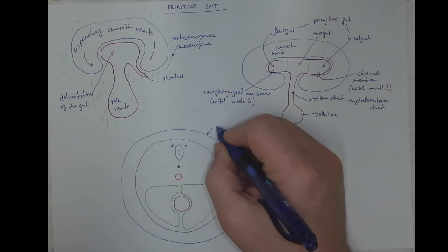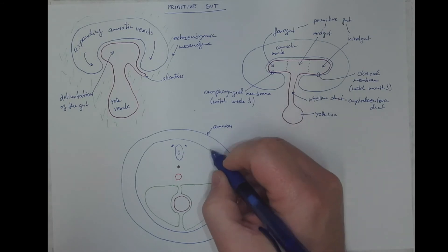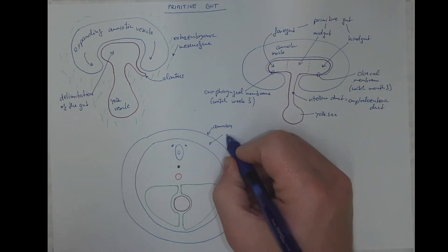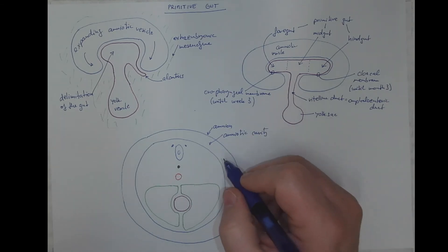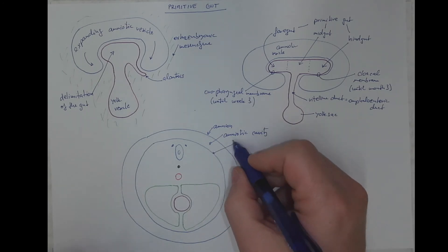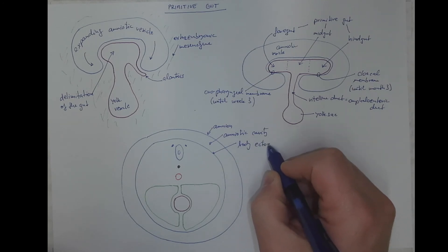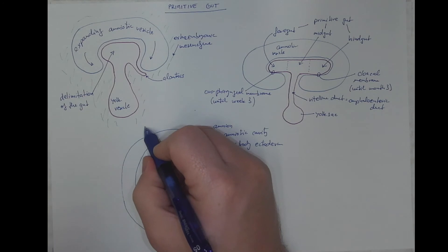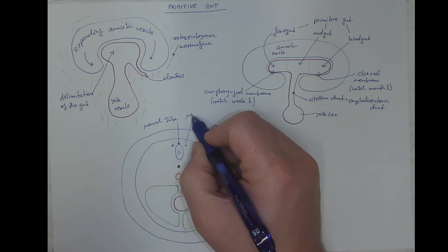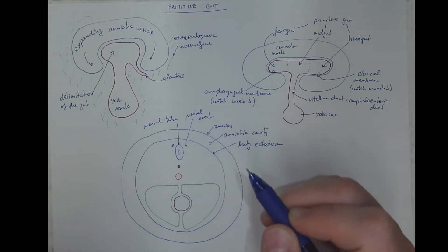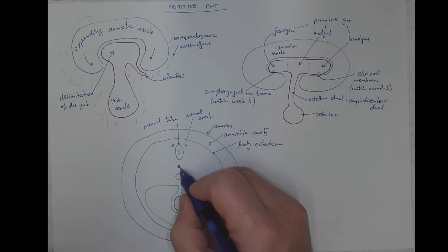So this will be the amnion, the wall of the amnion and here the amniotic cavity with the amniotic fluid. This will be the body ectoderm, the neural tube and neural crest, the notochord, the aorta, the dorsal aorta.